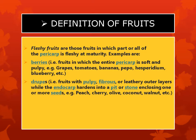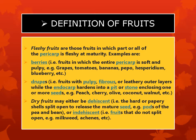Point 3 is drupes — fruits with pulpy fibers or a leathery outer layer while the endocarp hardens into a pit or stone enclosing one or more seeds. For example, peach, cherry, olive, coconut, walnut, etc. Point 4 is dry fruits that may be dehiscent — the hard or papery shells split open to release the seeds. Point 5 is dry fruits that are indehiscent — fruits that do not split open to release the seeds. For example, milkweed, acorns, etc.